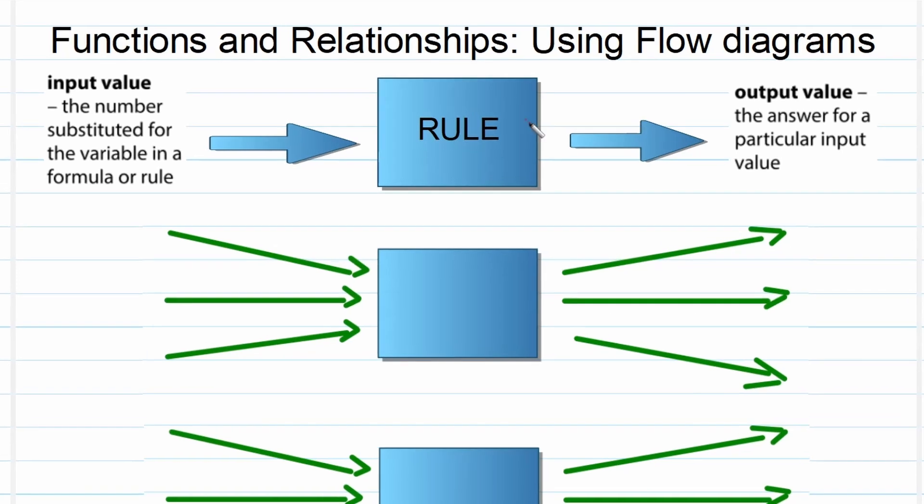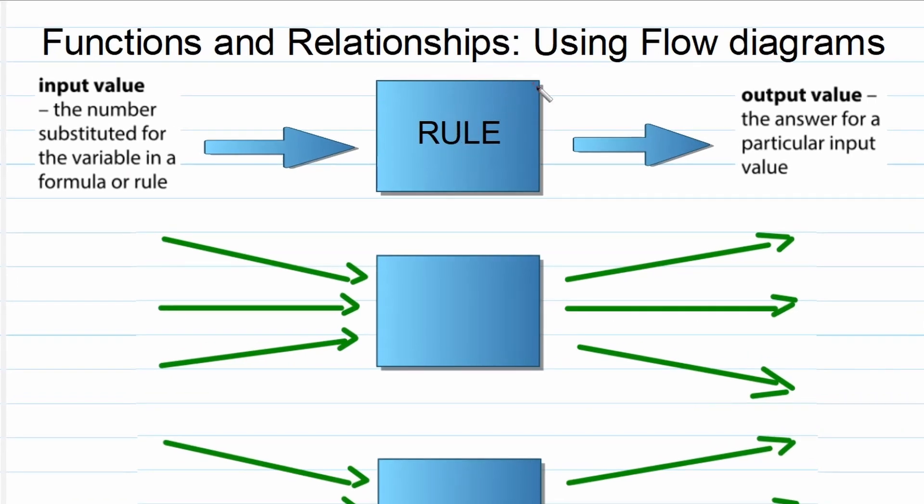What is a flow diagram? A flow diagram is a diagram that helps us to structure how to get an output value by using a specific rule and the input value. What is the input value? That's the number substituted for the variable in the formula or rule. What's the output value? The answer for the particular input value. In other words, after the calculation has taken place.